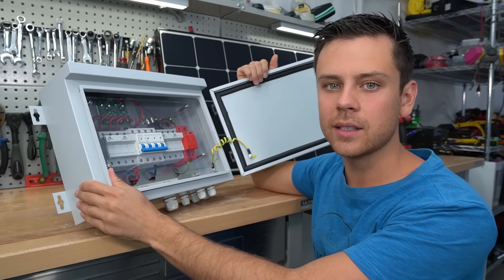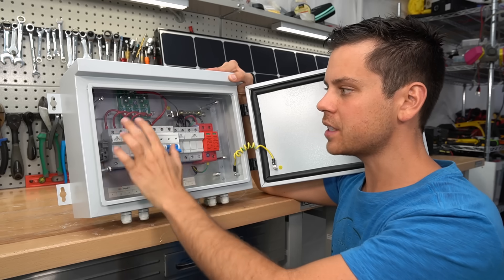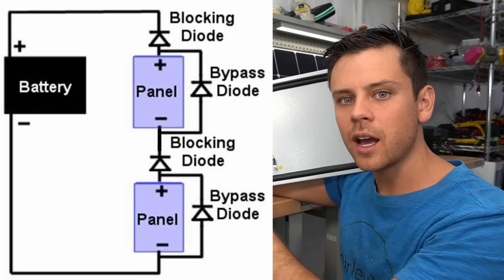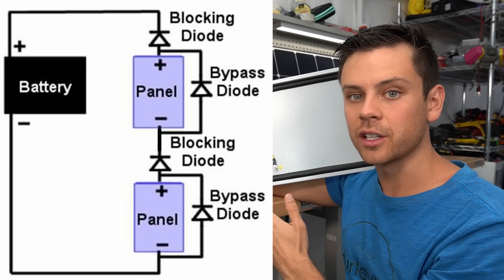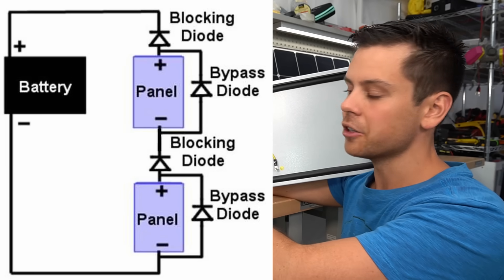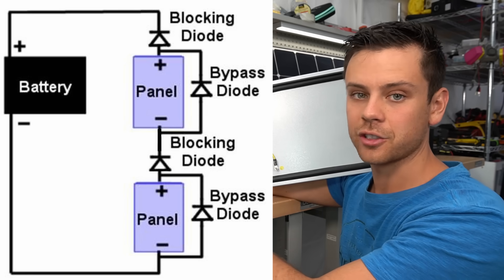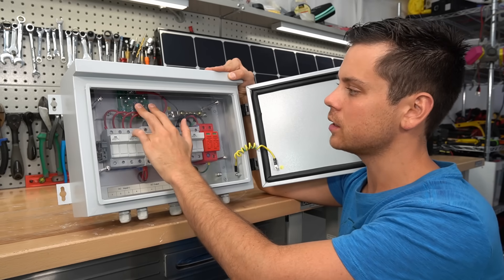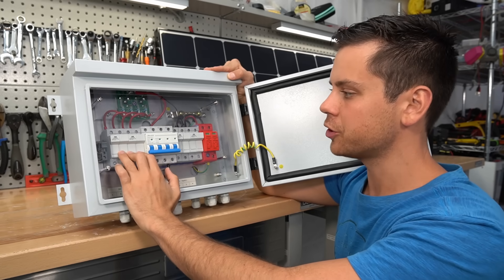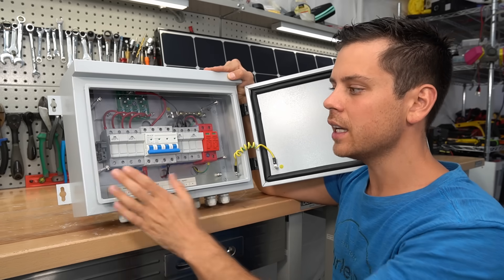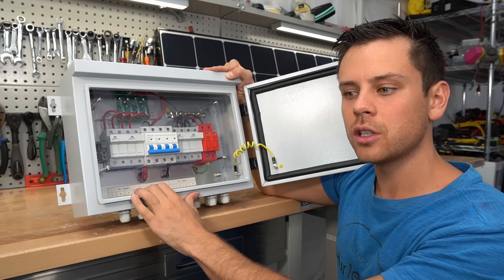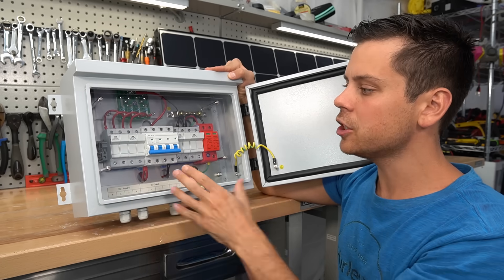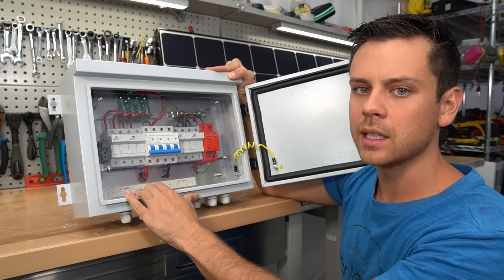Now let's talk about blocking diodes, because they're entirely different. The first difference is that a bypass diode is in a parallel configuration with the series string, whereas a blocking diode is in a series configuration with the string. This is a combiner box and it has two blocking diodes on the top, allowing for four individual strings. Traditionally, a blocking diode was used to ensure that the battery was not being discharged at night.